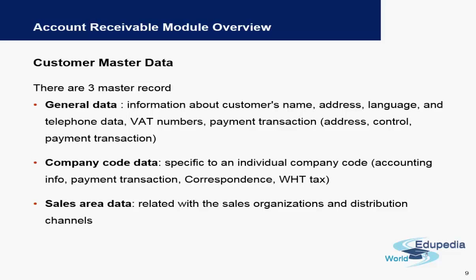Within the company code data tab, you will find information like payment transactions, correspondence, the reconciliation account, and the different kinds of payment methods the customer will use. Finally, similar to the purchasing organization data for vendors, we have sales organization data here, which means if you have multiple sales areas within your company code, you can further bifurcate the data for customer master.